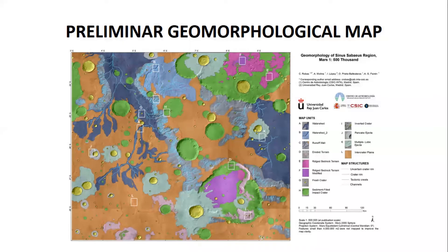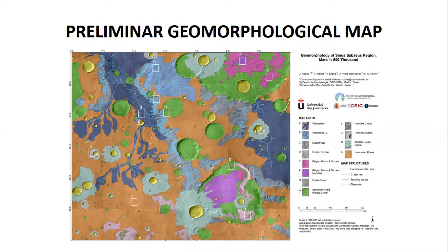We differentiate three channel-related units, colored in blue: the watershed unit, letter A, formed by two principal valleys; the run-off wall unit, letter C, which are walls with high channel density; and water set B, letter B, which is an intermediate step between the two previous units.